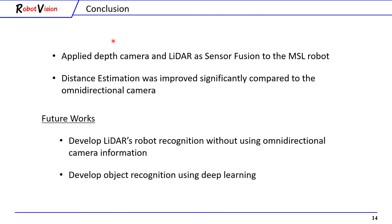To summarize this study, we applied a depth camera and LIDAR as sensor fusion to an RoboCup middle-sized league robot. As a result, distance estimation was improved significantly compared to the omnidirectional camera. For our future works, we are planning to develop LIDAR's robot recognition without using omnidirectional camera information, and to develop object recognition using deep learning. That's all. Thank you for watching.